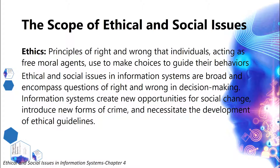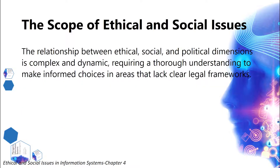The Scope of Ethical and Social Issues. Ethics refers to the principles of right and wrong that individuals, acting as free moral agents, use to make choices to guide their behaviors. Ethical and social issues in information systems are broad and encompass questions of right and wrong in decision-making. Information systems create new opportunities for social change, introduce new forms of crime, and necessitate the development of ethical guidelines. The relationship between ethical, social, and political dimensions is complex and dynamic, requiring a thorough understanding to make informed choices in areas that lack clear legal frameworks.